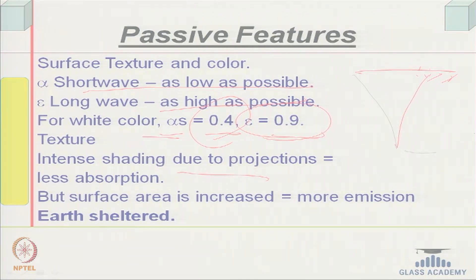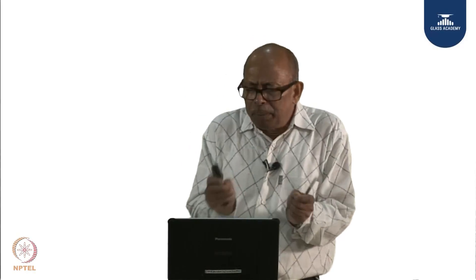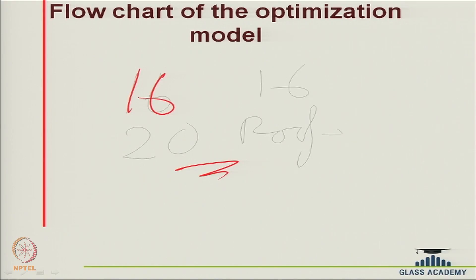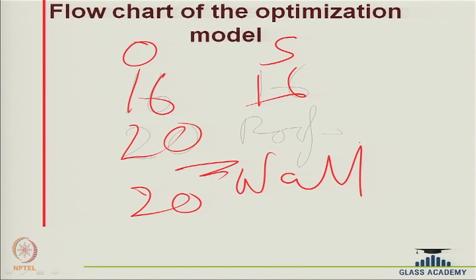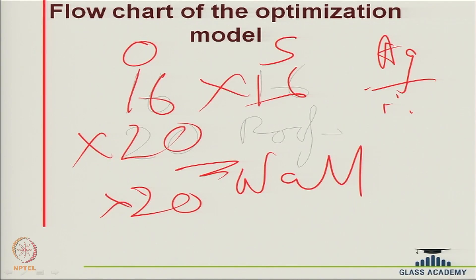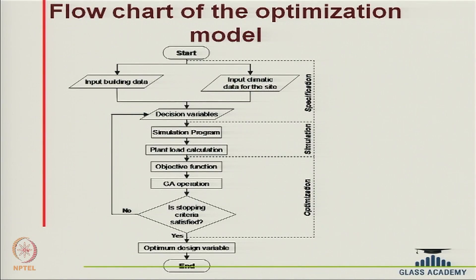One can use an optimization model because simple hand calculations become insufficient when you have, say, 16 possible orientations, 16 shapes, 20 roof constructions, 20 wall constructions, and several other variables like glass area to wall area ratio. With that many cases you have to choose the best, and such a problem can best be done using mathematical optimization models and some kind of optimization method.